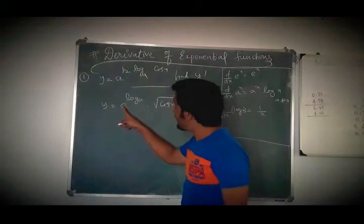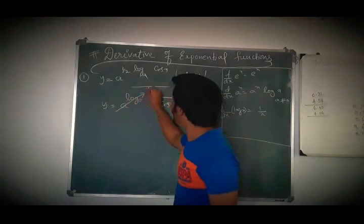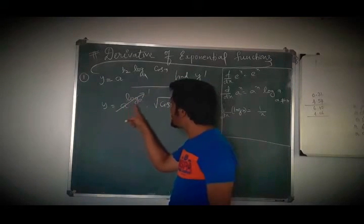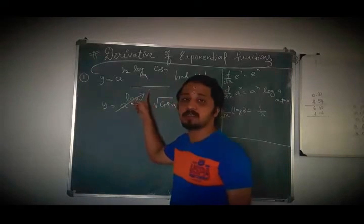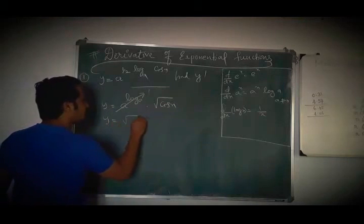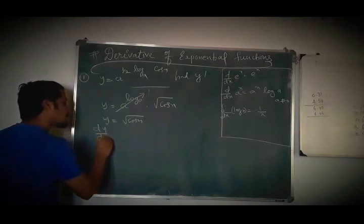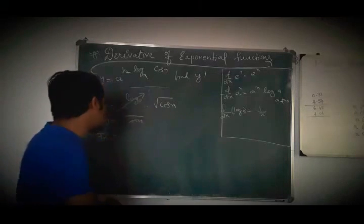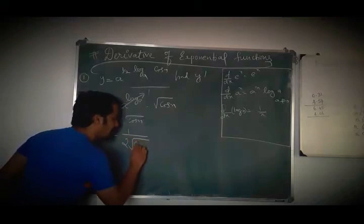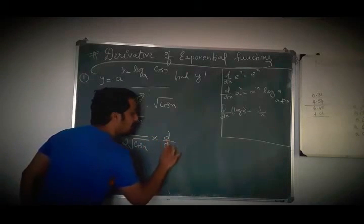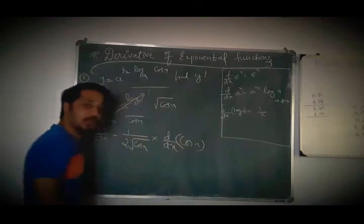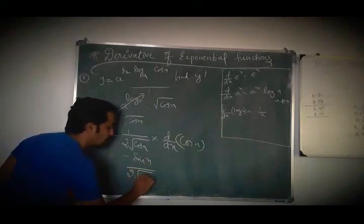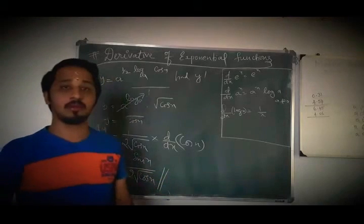Here, base and the function are the same, so this will become 1 according to the properties of logarithm. a^(log_a) — the bases are the same, so I will cancel this, and this is answered as 1. So now you will get y = √cos x. Now dy/dx: derivative of √x is 1/(2√x). So, 1/(2√cos x) into derivative of cos x. The derivative of cos x is −sin x, so dy/dx = −sin x / (2√cos x). That is the equivalent answer for the first one.